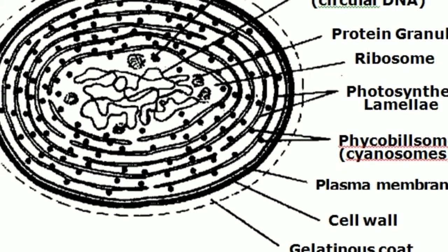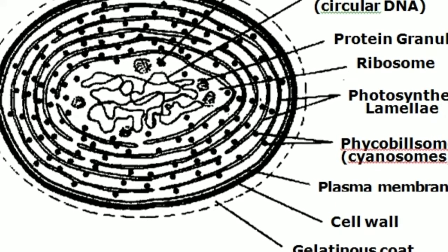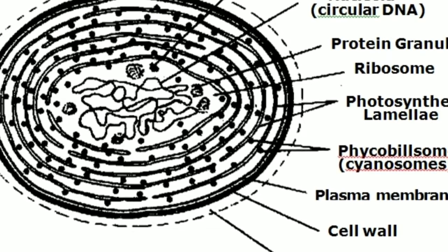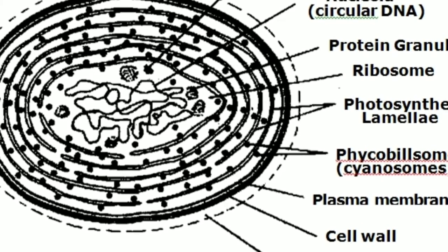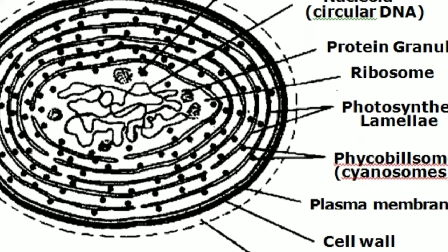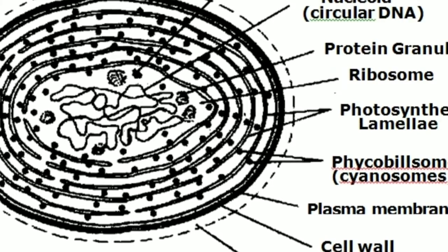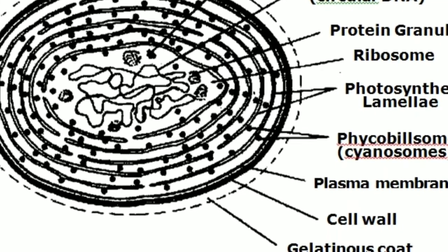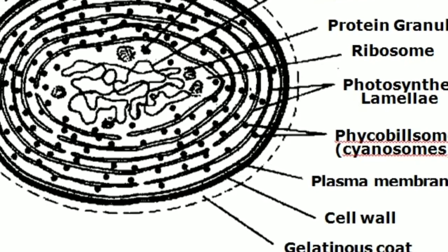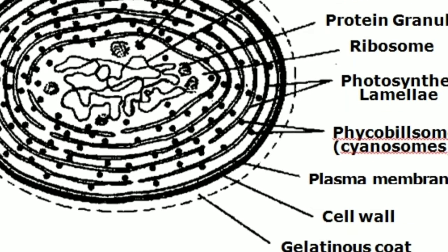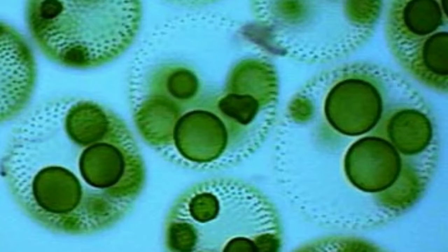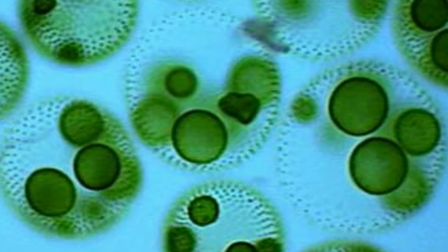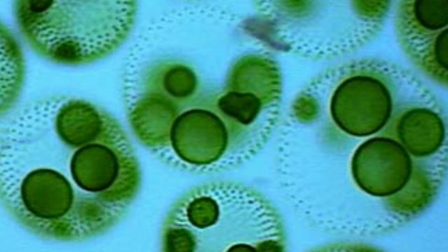This lamellae forms closed flattened sacs which contain chlorophyll A, carotenoids and three phycobiliprotein proteins: C-phycocyanin, allophycocyanin and C-phycoerythrin. Thylakoids are arranged in parallel rows close to the periphery of cell or they are distributed irregularly throughout the cell.